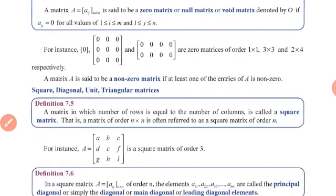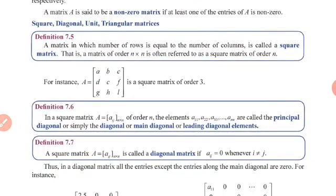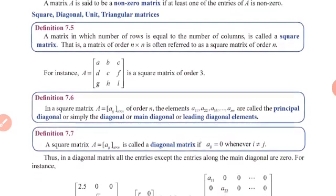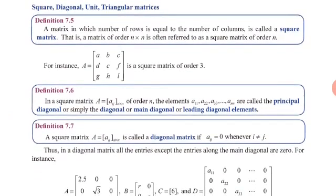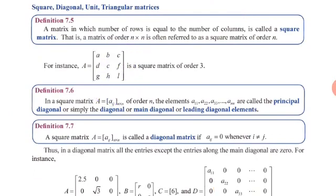Next is the square matrix. A matrix in which the number of rows and columns are equal is called a square matrix. For example, a matrix with 3 rows and 3 columns has equal order and is therefore called a square matrix.